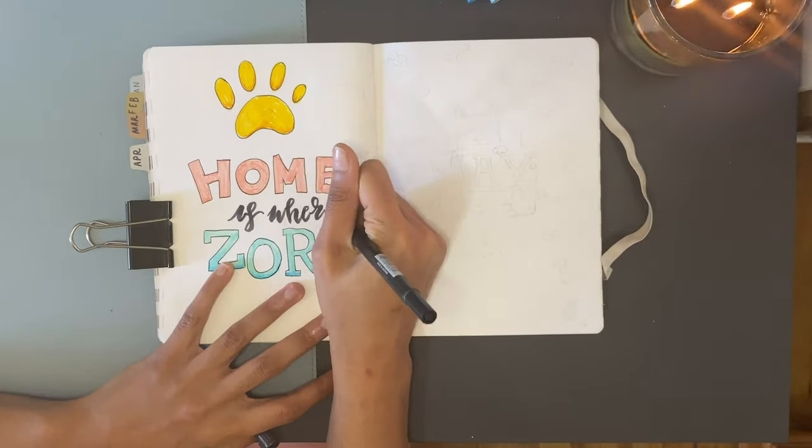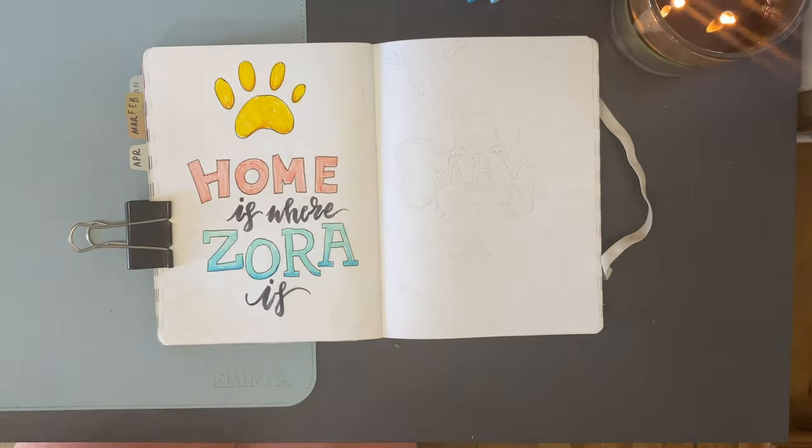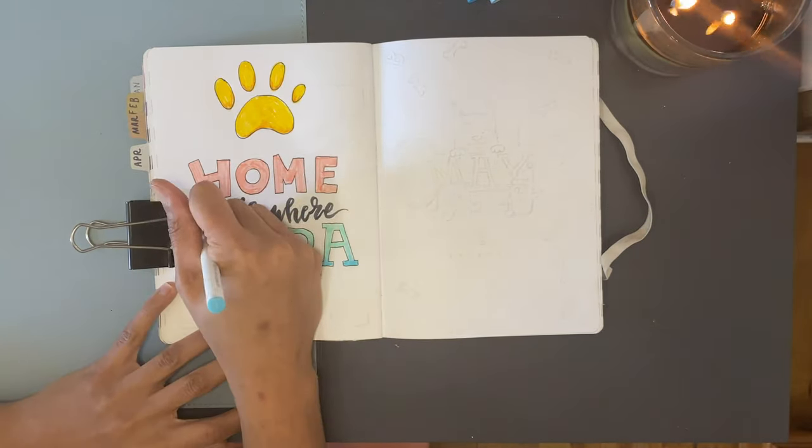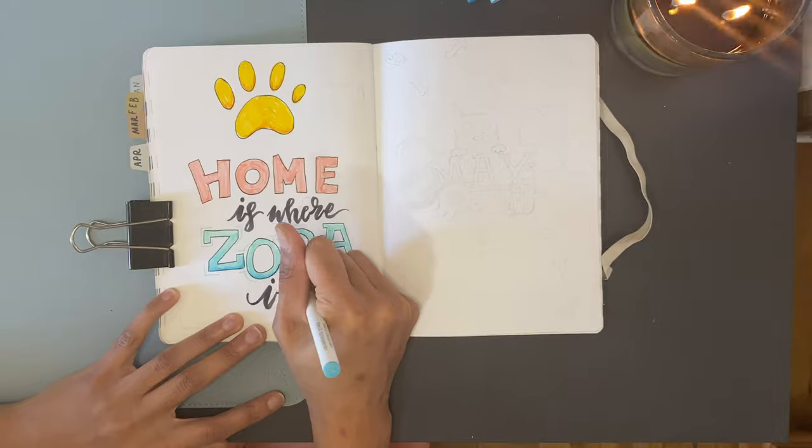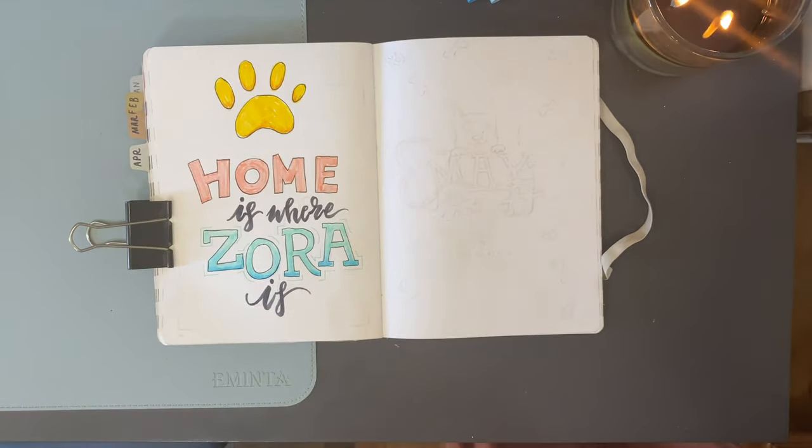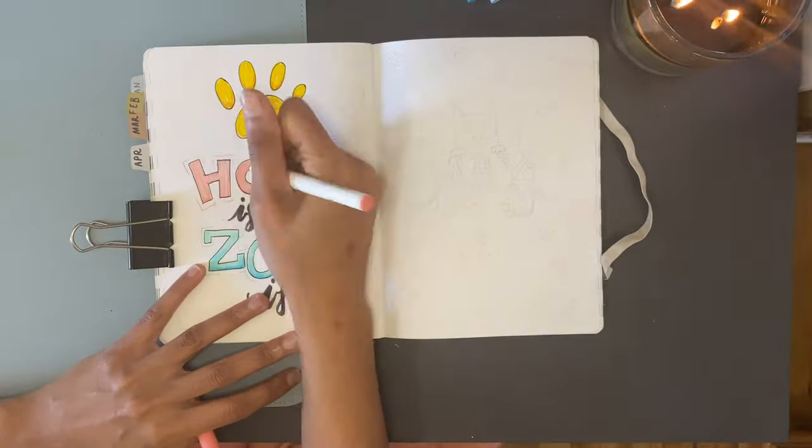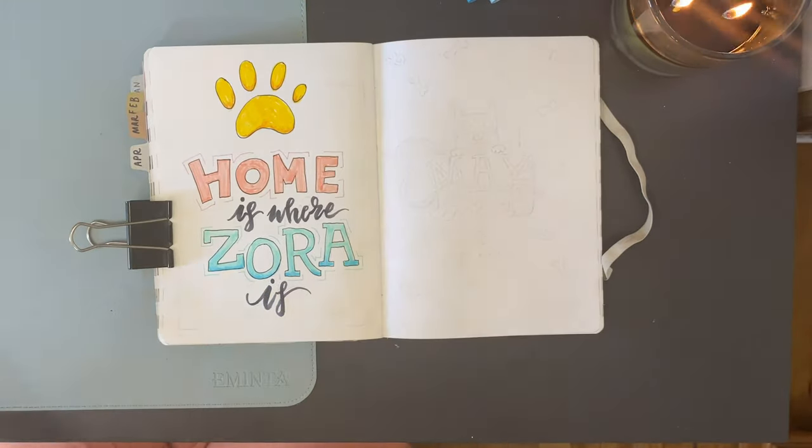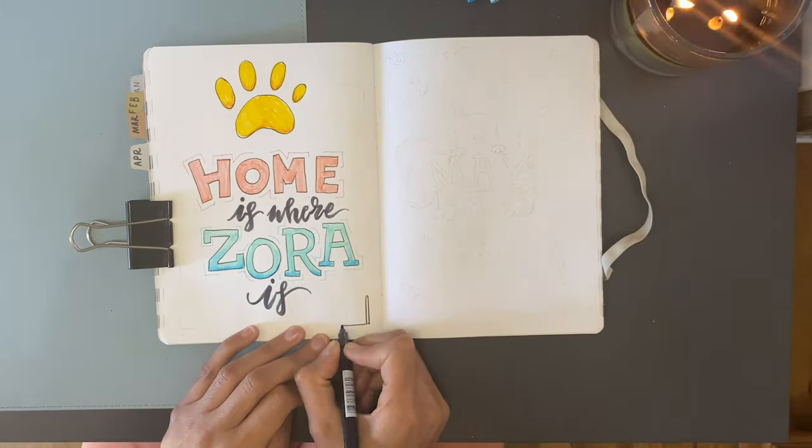I'm also using my Cricut fineliners. I think I was inspired by my own stationery tour video and decided to use a few underutilized supplies with this theme. I'm just using those to partially outline home and Zora for even more interest.